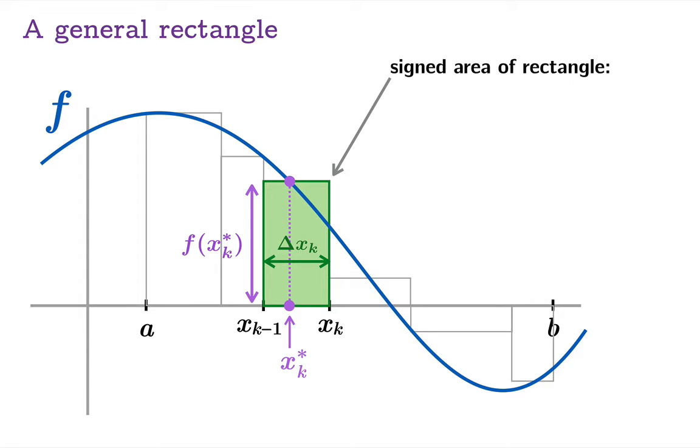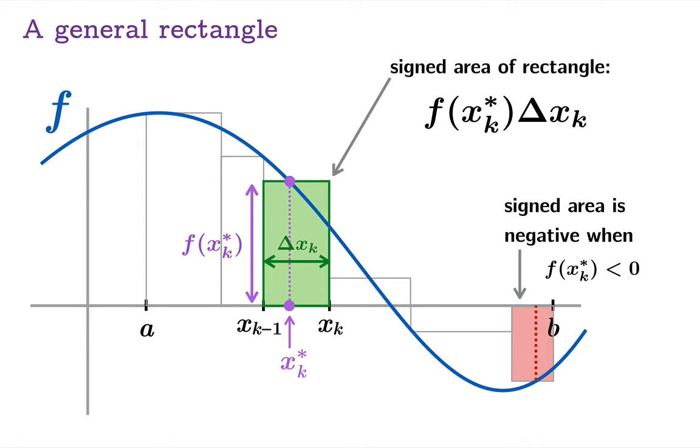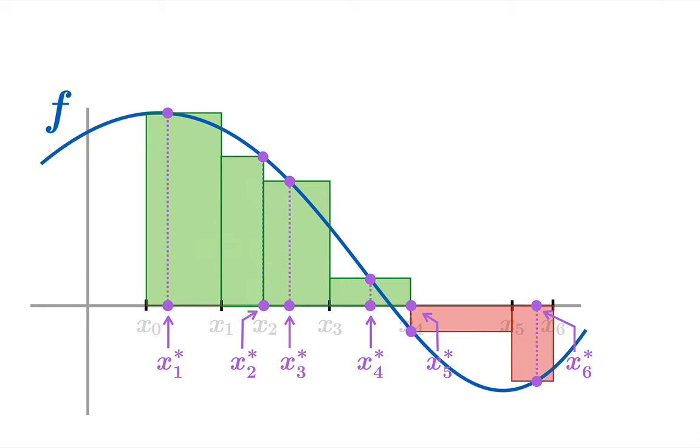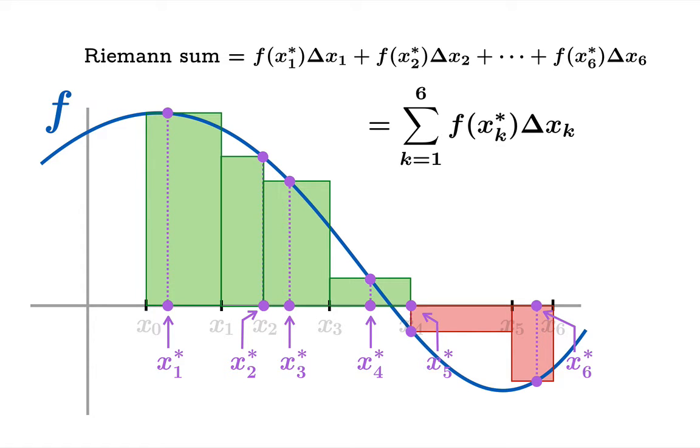Now, we notice this is actually a signed area because if the function value happens to be negative then f of x sub k being negative means this product will be a negative number. So when you see a Riemann sum, just notice that when the function dips below the horizontal axis, then your boxes that are based on those subintervals, those are going to contribute negatively to your Riemann sum. The ones that lie above will contribute positively. So here's a very graphical picture of our Riemann sum and with our new notation we can make the sum look a little snappier. In fact, using sigma notation we can make it look very compact.